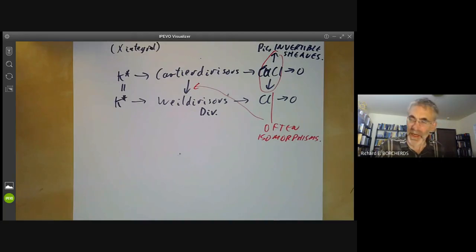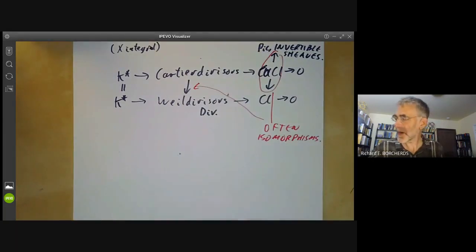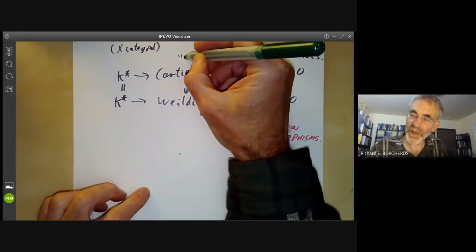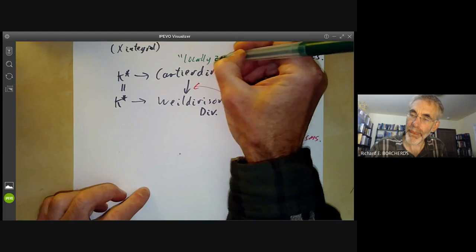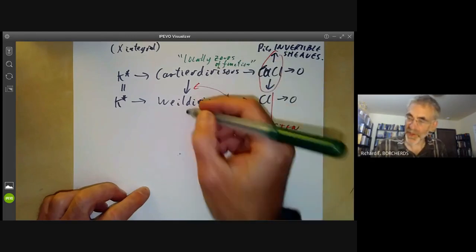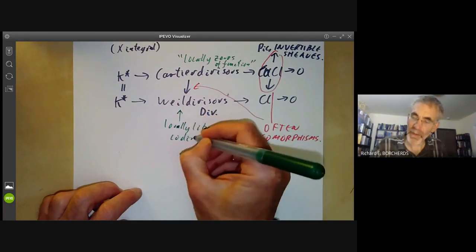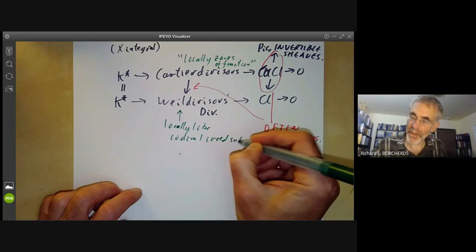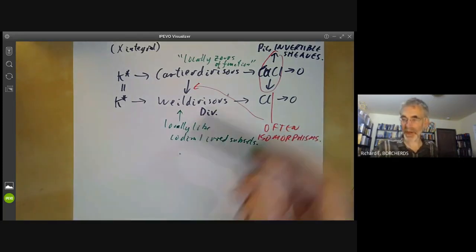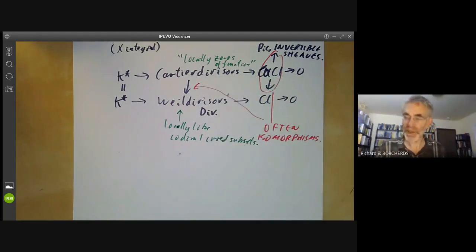The difference in philosophy is that Cartier divisors sort of look locally like the zeros of a function, or poles of a function, whereas Weil divisors sort of look locally like codimension one irreducible subsets. You may think that the zeros of a function are just the same as a union of irreducible subsets, and you're mostly right, which is why Cartier divisors and Weil divisors are really quite similar.